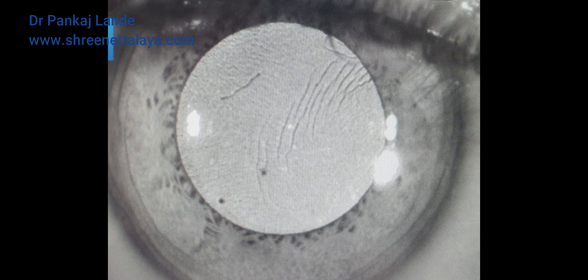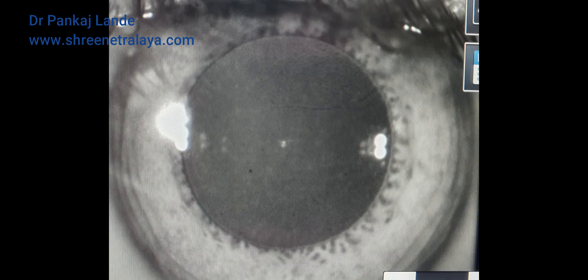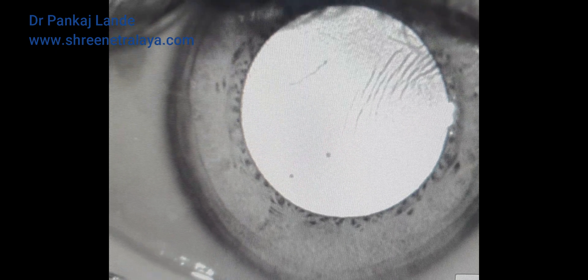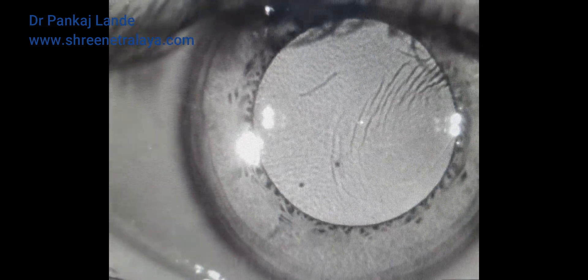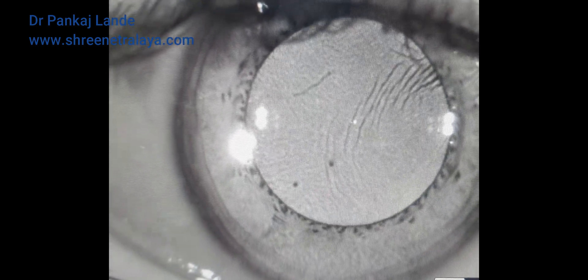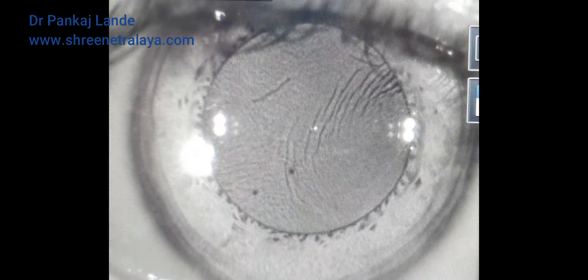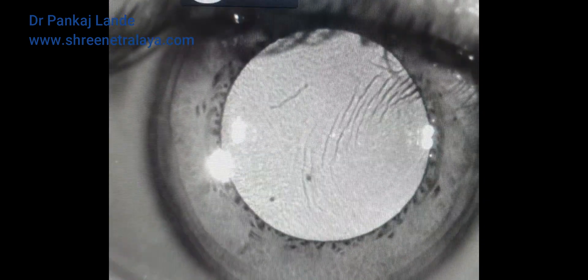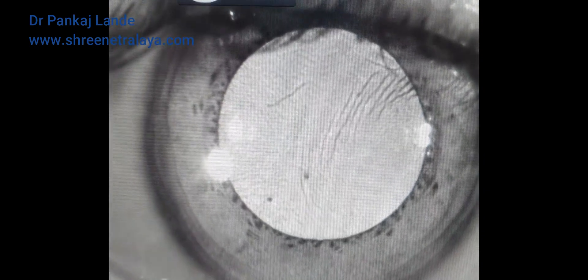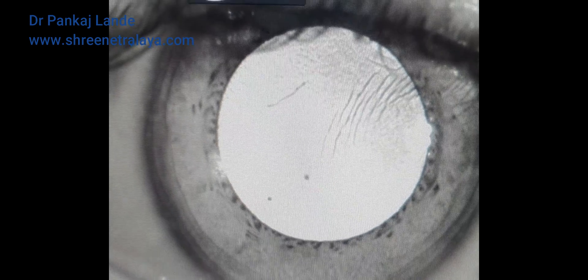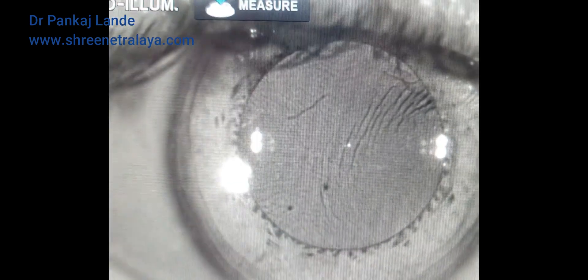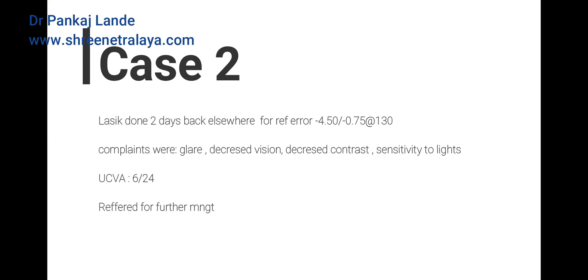In this video you are seeing a retro-illumination image of a LASIK flap showing folds in the flap and a cotton fiber. You can easily demonstrate the folds in the flap in this small video. Retro-illumination image on the auto-ref machine is one of the very important tools to diagnose LASIK flap striae.